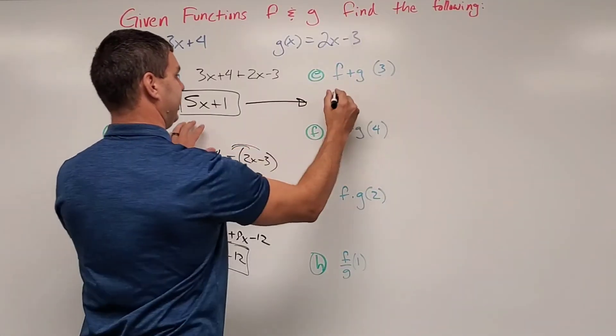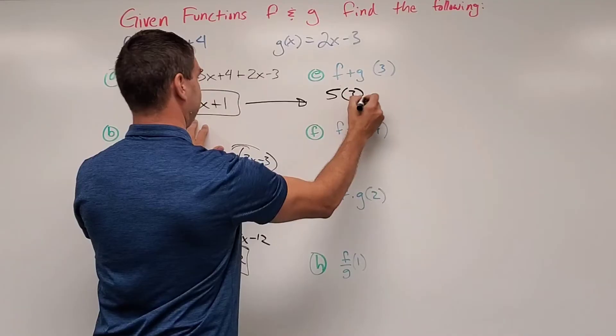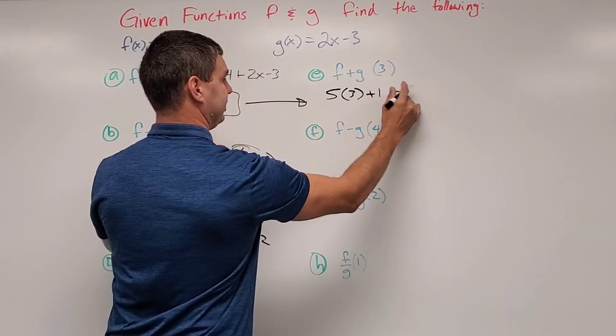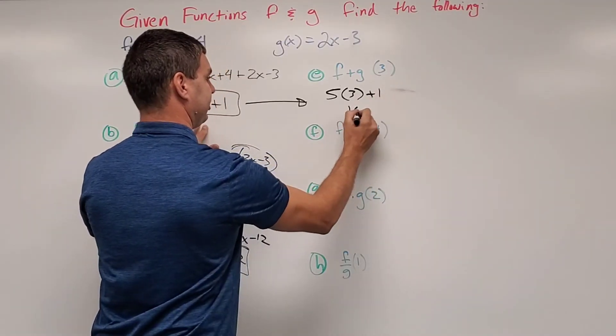Alright, so 5 times 3 now. In fact, I'll do it like this. 5 times 3 plus 1. 15 plus 1 is 16. I'm not going to use equal signs there. Let's use 16.